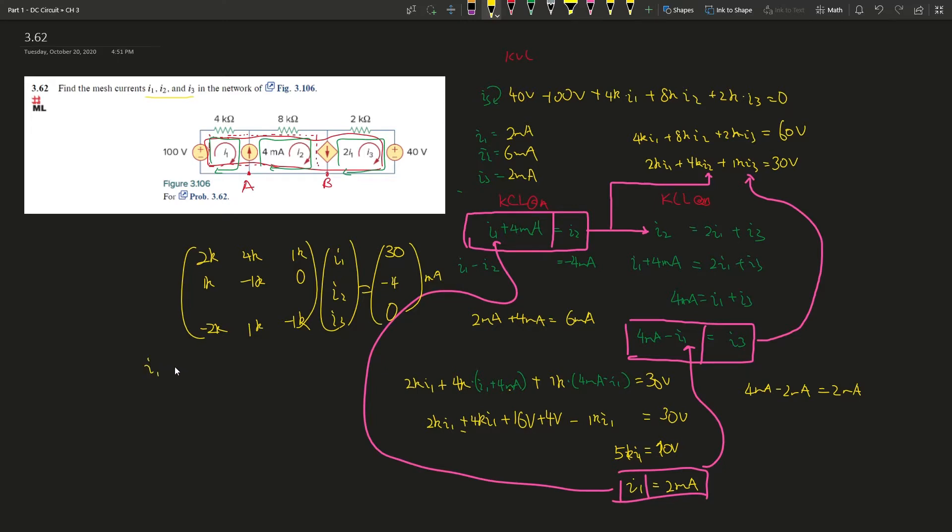And in the end, if you solve with your calculator, you should get i1 equals 2 milliamps, and then i2, i2 is 6 milliamps, or i3 is 2 milliamps. Okay, and in the end, the calculator should show you like 2 times 10 to the power of negative 3, 6 times 10 to the power of negative 3, and then 2 times 10 to the power of negative 3. i1, i2, i3 equals, you know, whatever it's in here, right? So you know, i1 is this, i2 is this, i3 is this.